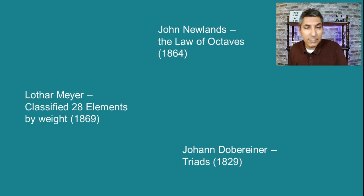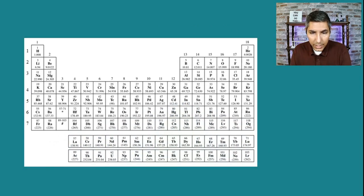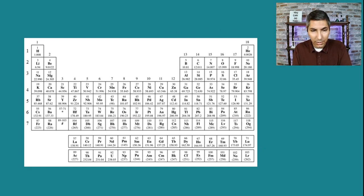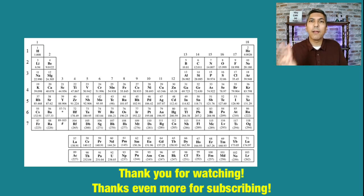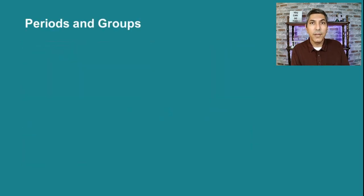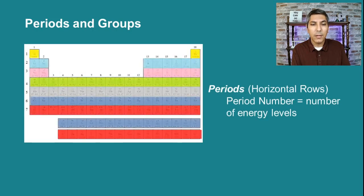In early 1869, Lothar Meyer classified 28 of the elements by their weight. So there were other chemists making classifications and talking about the elements. Here is our modern periodic table — as of the time of this recording we have 118 elements. In this video we're going to talk about three specific ways in which we can classify elements. The first way is by periods and groups.